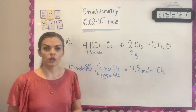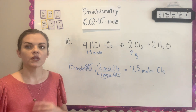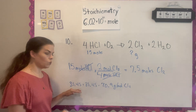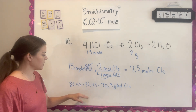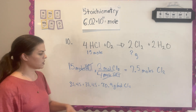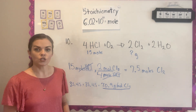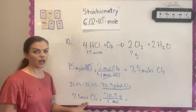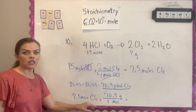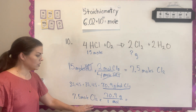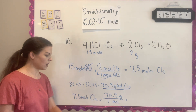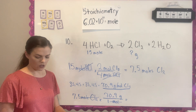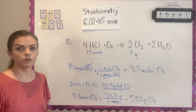You can use the molar mass from your periodic table to calculate grams. The molar mass of Cl2 is two chlorine atoms added together: one Cl is 35.45, so two of them equals 70.9 g/mol. Taking the 7.5 moles of Cl2 calculated and using the molar mass ratio — 70.9 grams on top and moles on the bottom — the moles cancel out and you get 532 grams of Cl2.